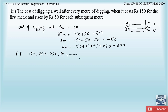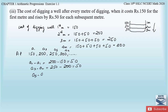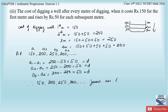Now let us check whether this list of numbers forms an AP by determining the common difference. a2 minus a1 = 200 minus 150 = 50. a3 minus a2 = 250 minus 200 = 50. a4 minus a3 = 300 minus 250 = 50. All values of d are equal, therefore the list of numbers 150, 200, 250, 300 forms an AP as the common difference between each term is equal.